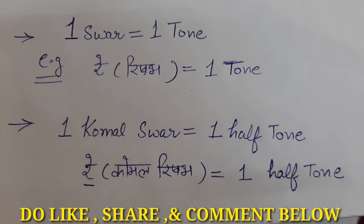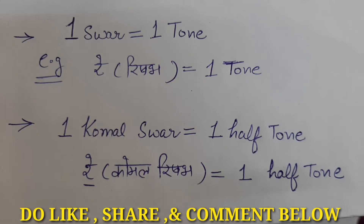जैसे एक शुद्ध रूप है स्वर का — Rishabh शुद्ध है। जब ये अपनी particular frequency से कुछ नीचे उतरता है, तो ये Komal रूप ले लेता है। मतलब जो इसका full रूप है वो उसको Half कर देता है, इसलिए इसको Half Tone या Semitone कहा जाता है। अब ये जो Tone है इसको Full Tone भी कहा जाता है, और Half Tone को Half Tone या Semitone कहा जाता है।